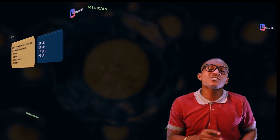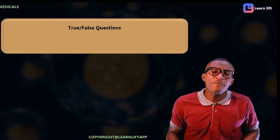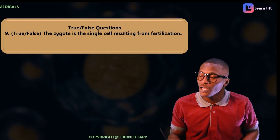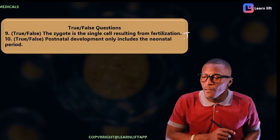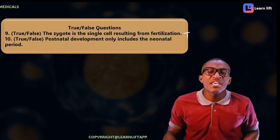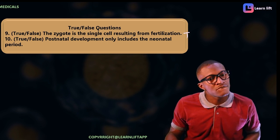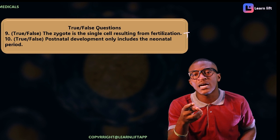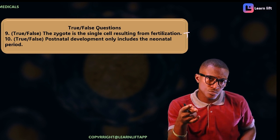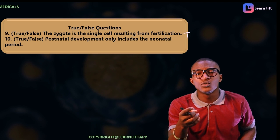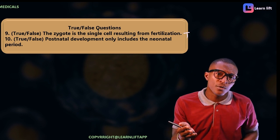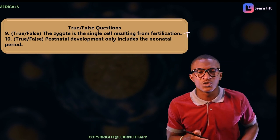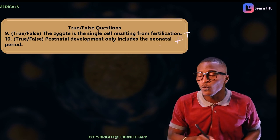True or false: the zygote is a single-celled organism formed from fertilization. Is it single or double? The answer is single, so this is true. Next: postnatal developmental period includes only neonatal. That is false, because postnatal includes neonatal, childhood, puberty, adolescence, and adulthood — not only neonatal.